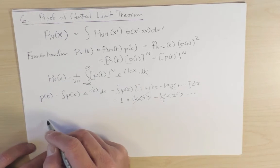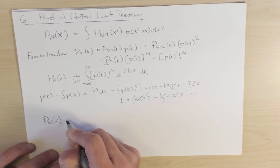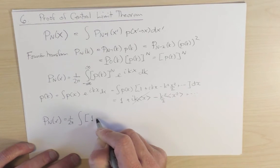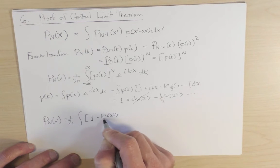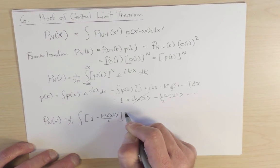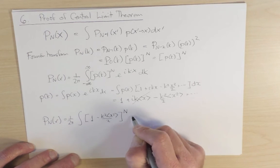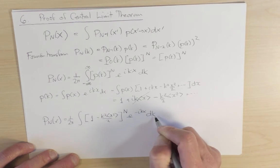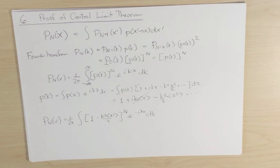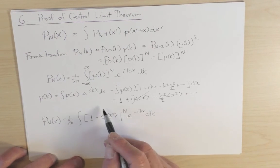Now I'll plug in this p of k back into this integral for P_n of x. So P_n of x equals 1 over 2 pi, the integral of quantity 1 minus k squared x squared average over 2, raised to the power n, times e to the minus i k x dk. Now I make use of the fact that I'm interested in the limit of large n and small k. Small k corresponds to large x in the Fourier domain, so I can approximate this object by the exponential.